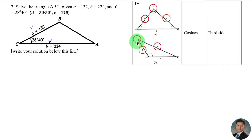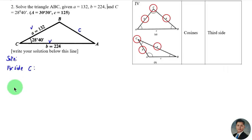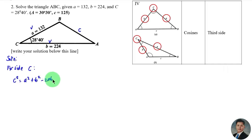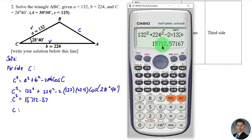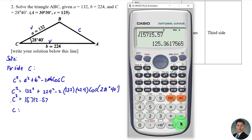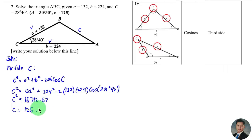For Case 4 with two sides and the included angle, we use the Cosine Law to find the third side c. We have c² = a² + b² − 2ab·cos C. Substituting the given values gives 15,712 (approximately), and taking the square root gives c = 125.36 units.